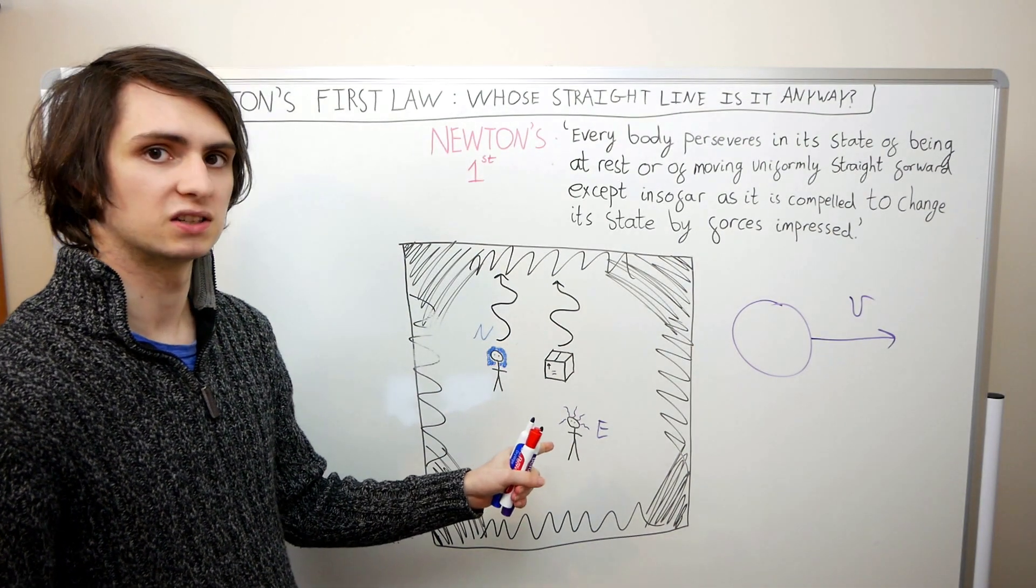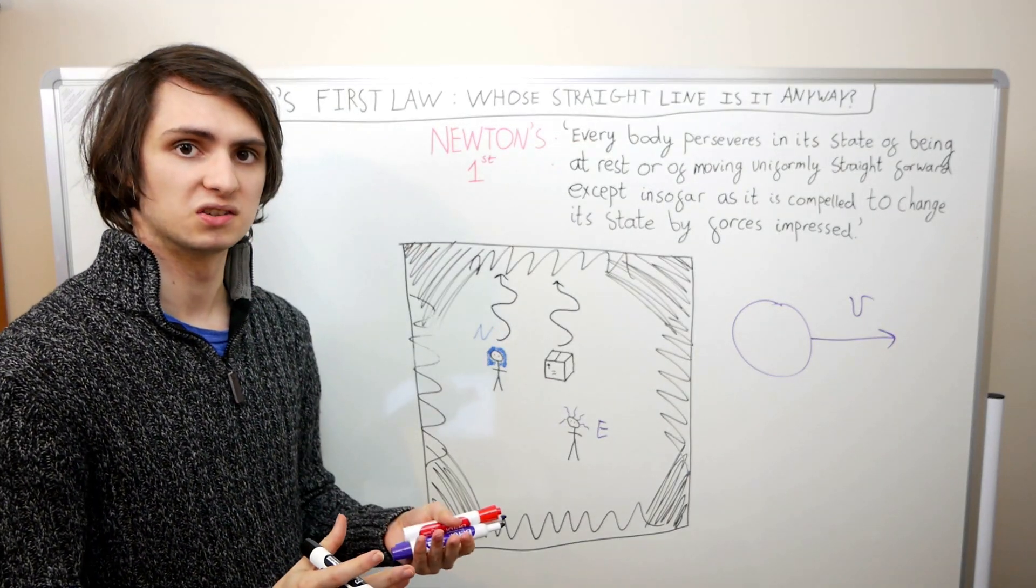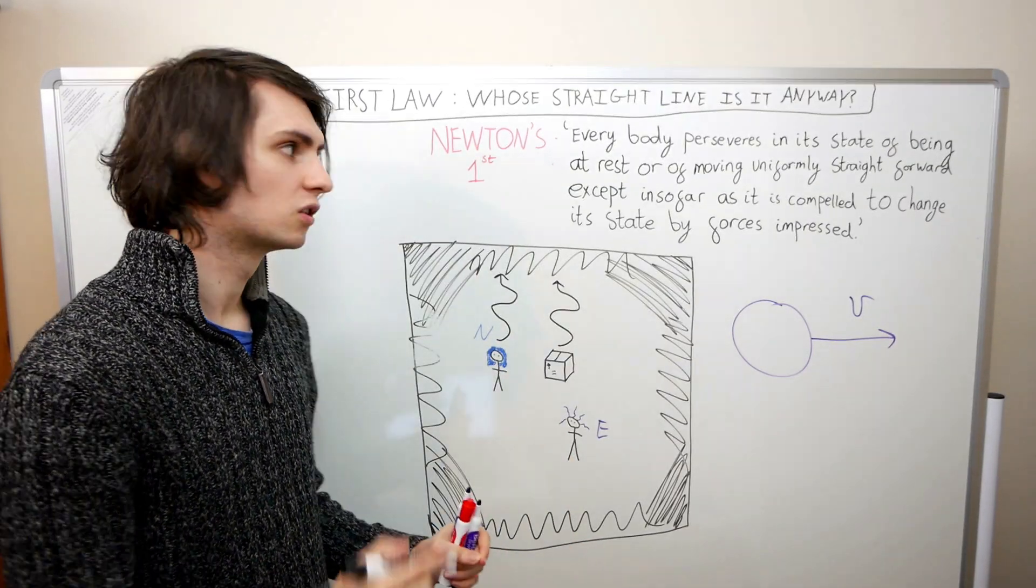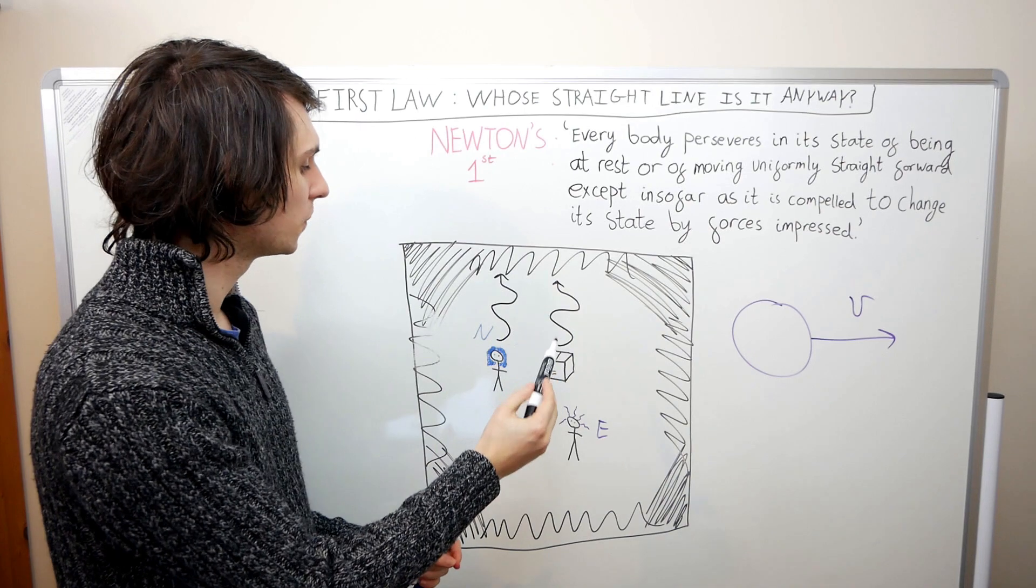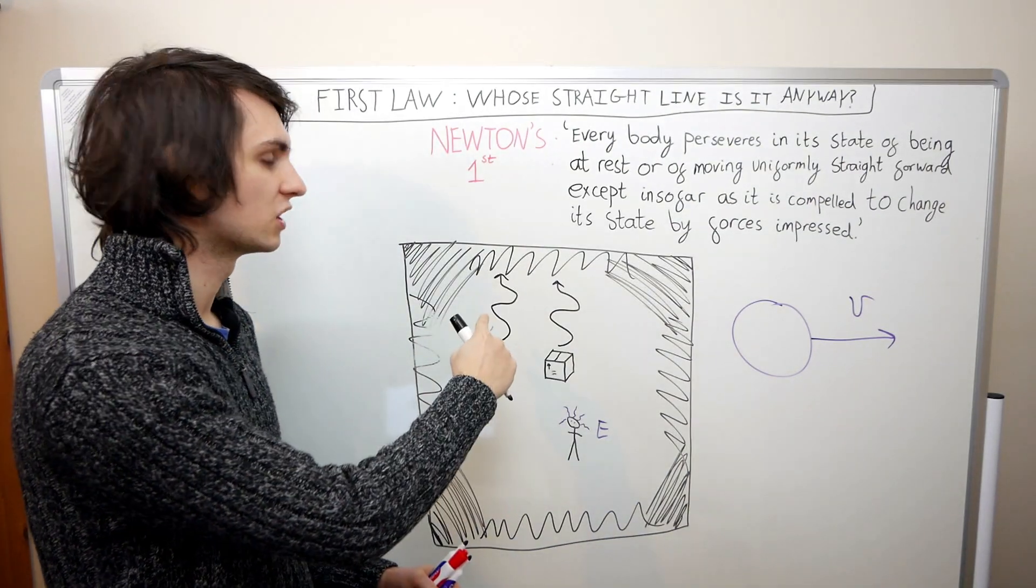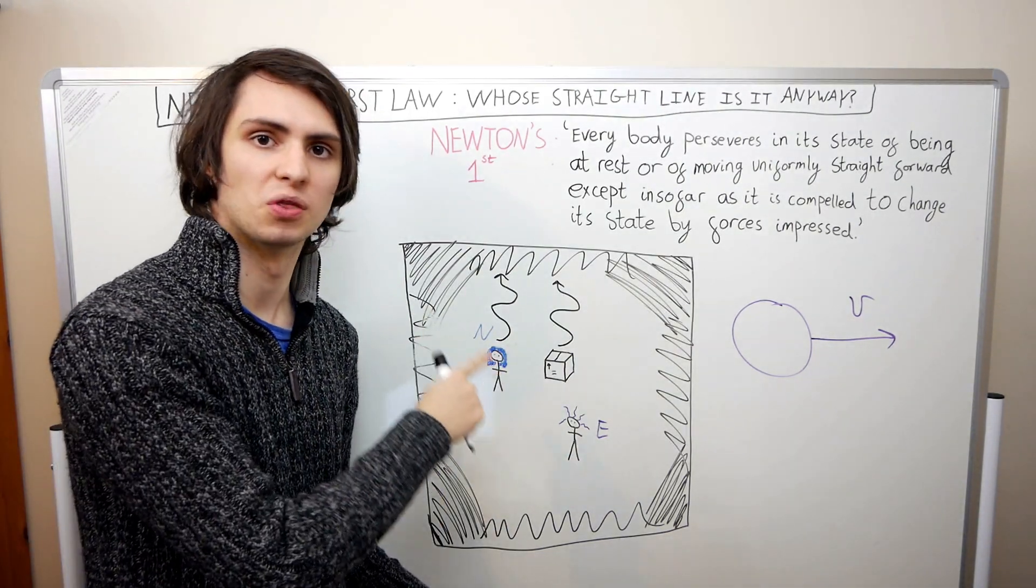Now, from Einstein's perspective, Newton and the box clearly aren't moving in straight lines. They're wiggling like nobody's business. That means that Einstein can conclude from Newton's first law that Newton and the box can't be force-free bodies. Because they're not moving in straight lines, there has to be some external force that's acting on them.